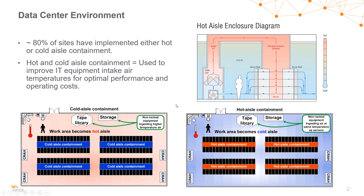When building out environments, especially data center environments, airflow is an important issue. We want to ensure the switch is positioned so that airflow meets the customer's demands. In the lower left we can see cold aisle containment, where cold air is sucked into the back of the switches and pumped out through the front. On the right is the exact opposite — air comes in through the front and hot air is pumped out the back, which we call front-to-back airflow.